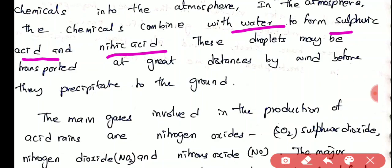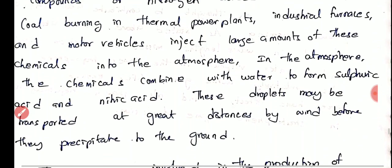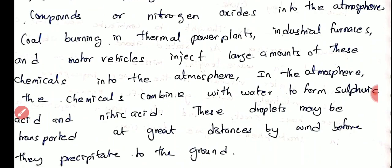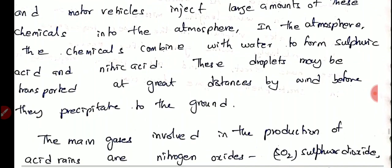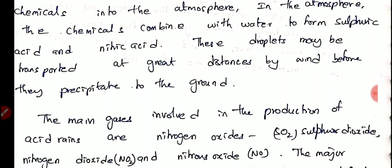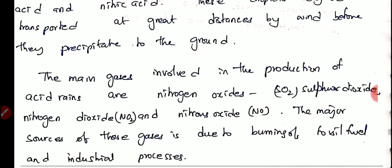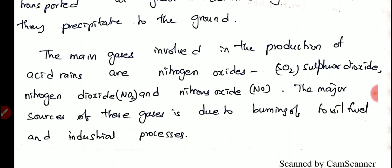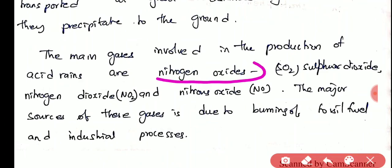In the atmosphere, these chemicals combine with water to form sulfuric acid and nitric acid in small droplets. These sulfur compounds and nitrogen compounds are emitted by factories, vehicles, and thermal power plants using coal burning and industrial furnaces. They combine with humidity or small water droplets in the atmosphere, form acids, and these acids combine with rainwater and come to the earth's surface as acid rain — this process is called acidification.